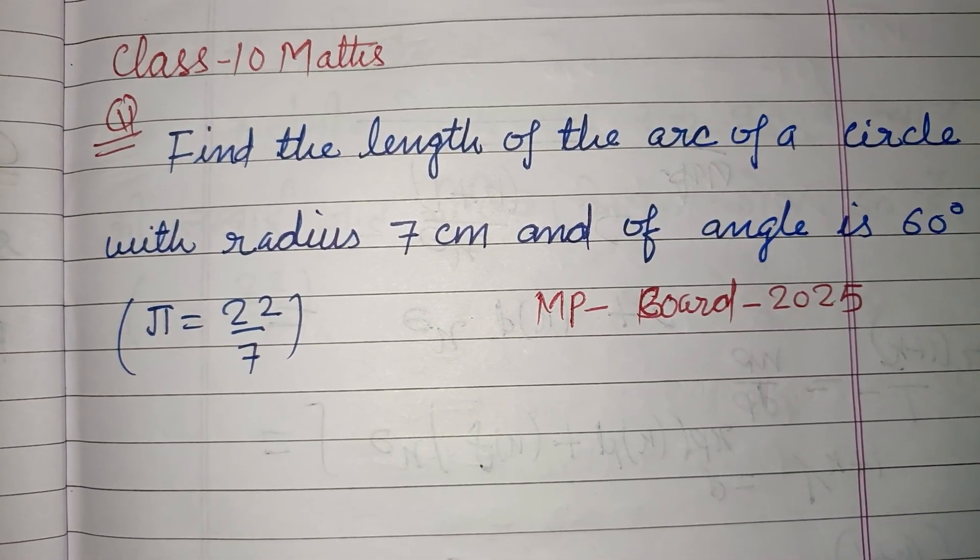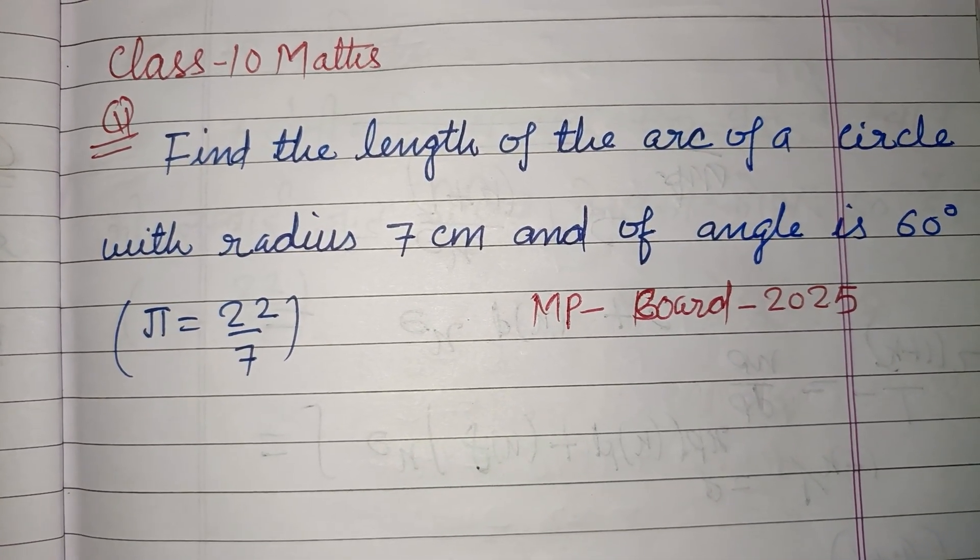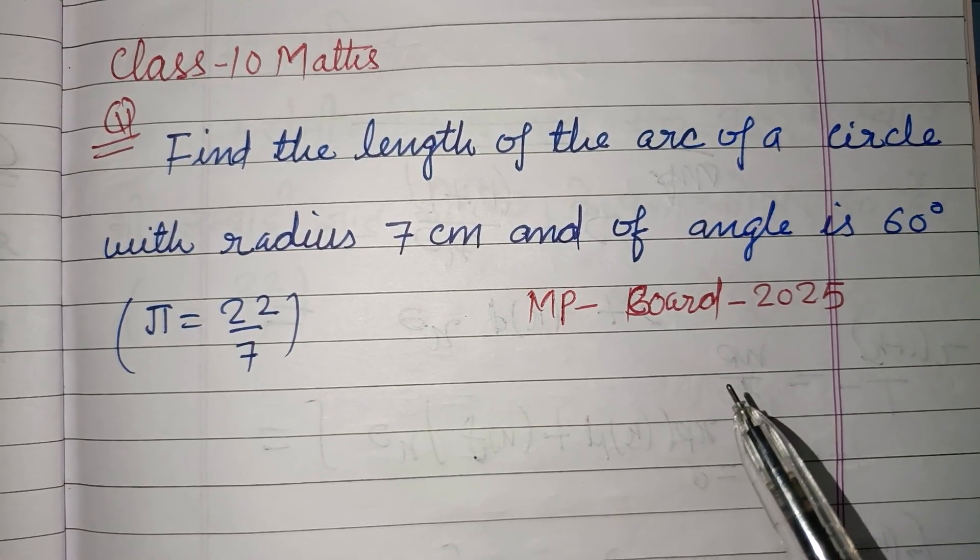Hello viewers, warm welcome to this YouTube channel. Question from MP board exam 2025: find the length of the arc of a circle with radius 7 cm and angle 60 degrees.